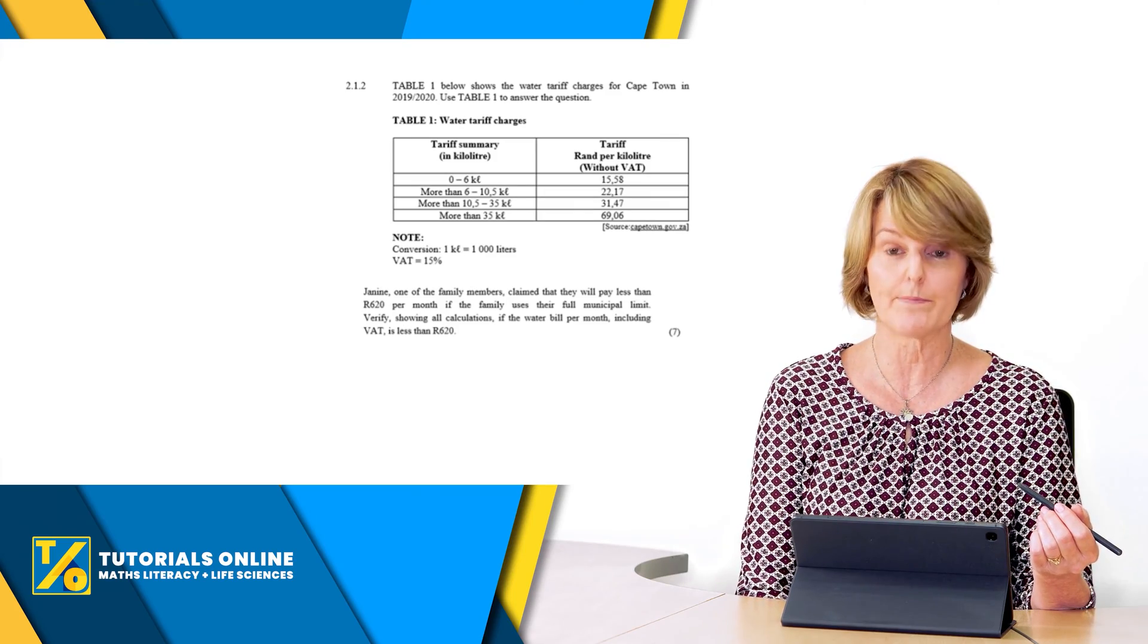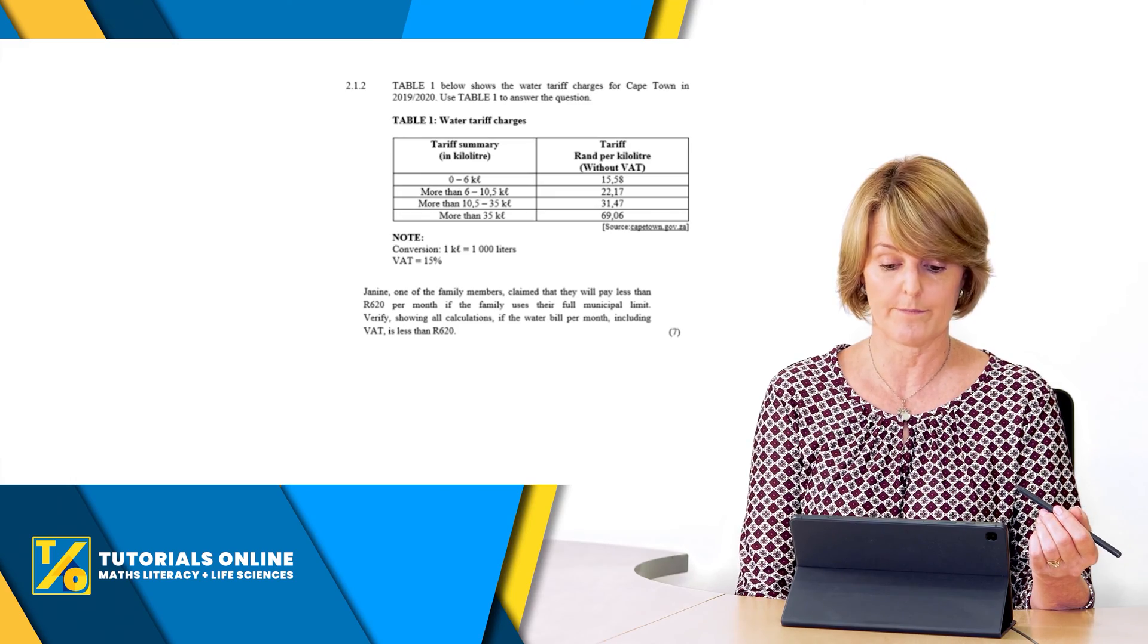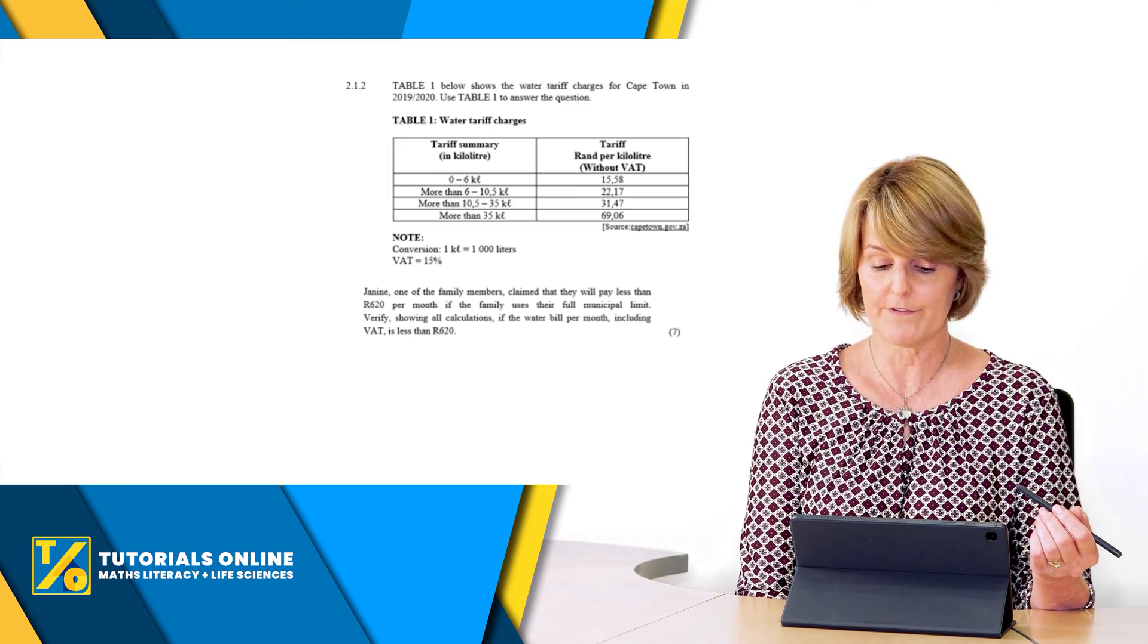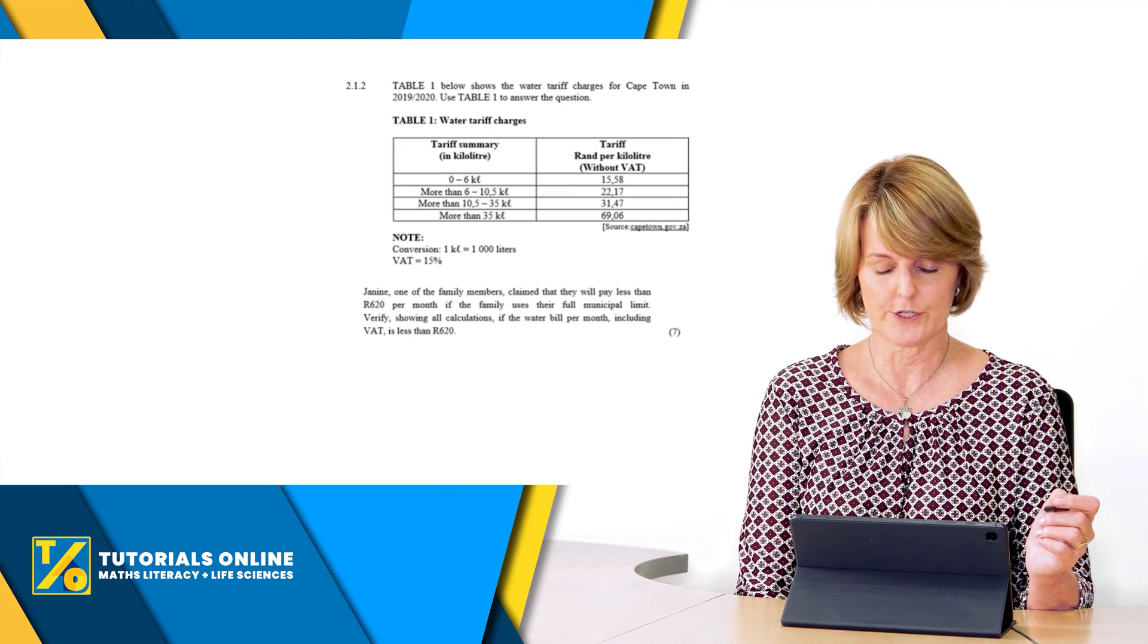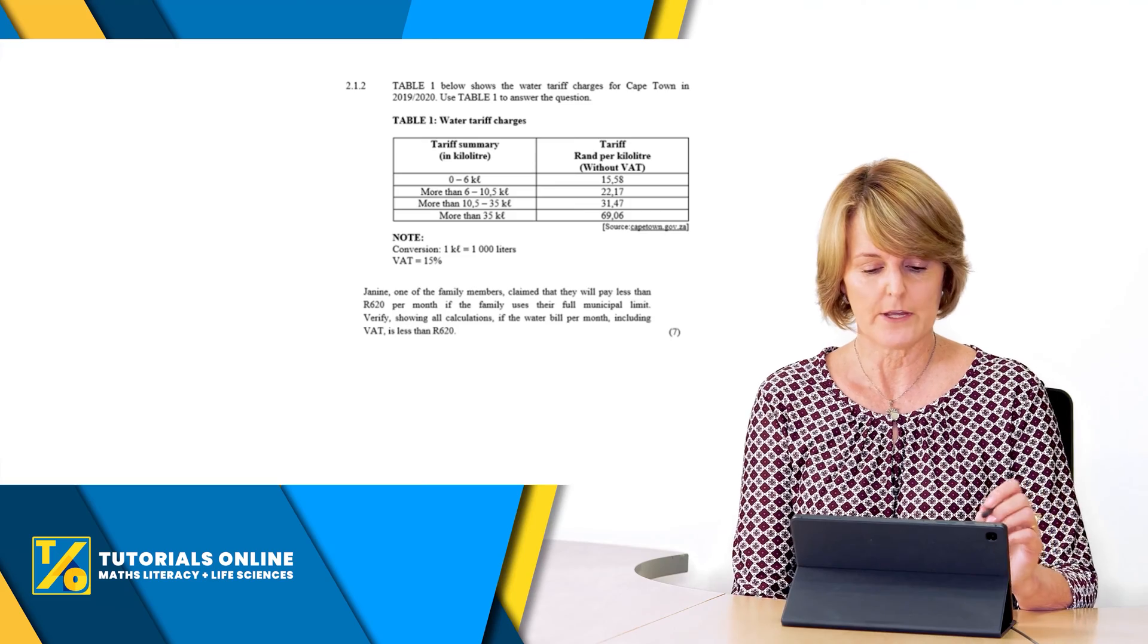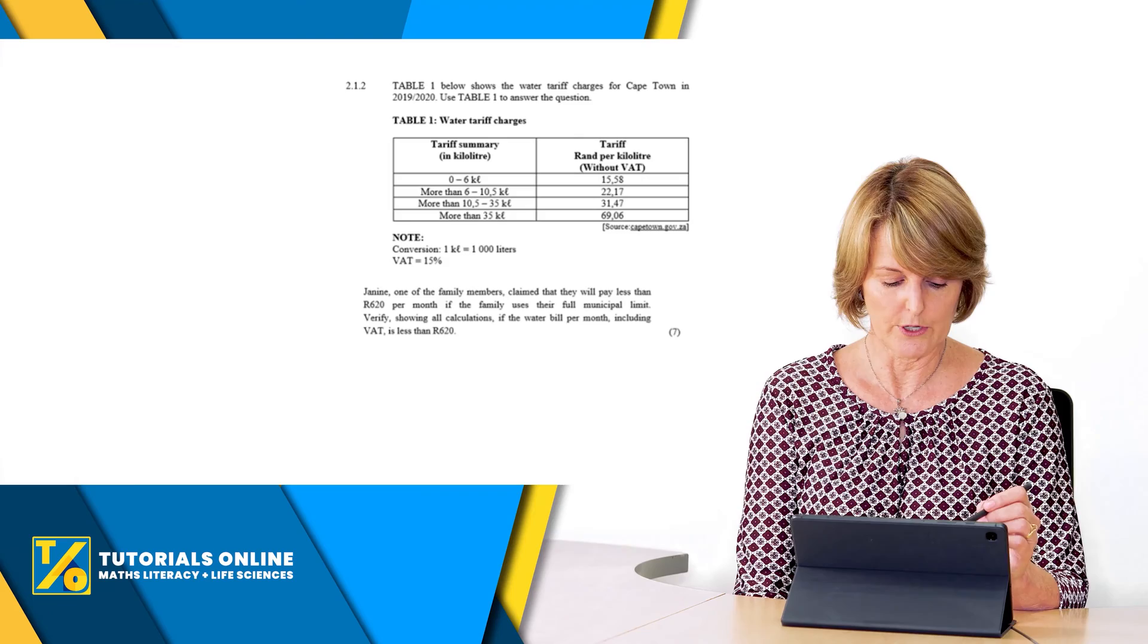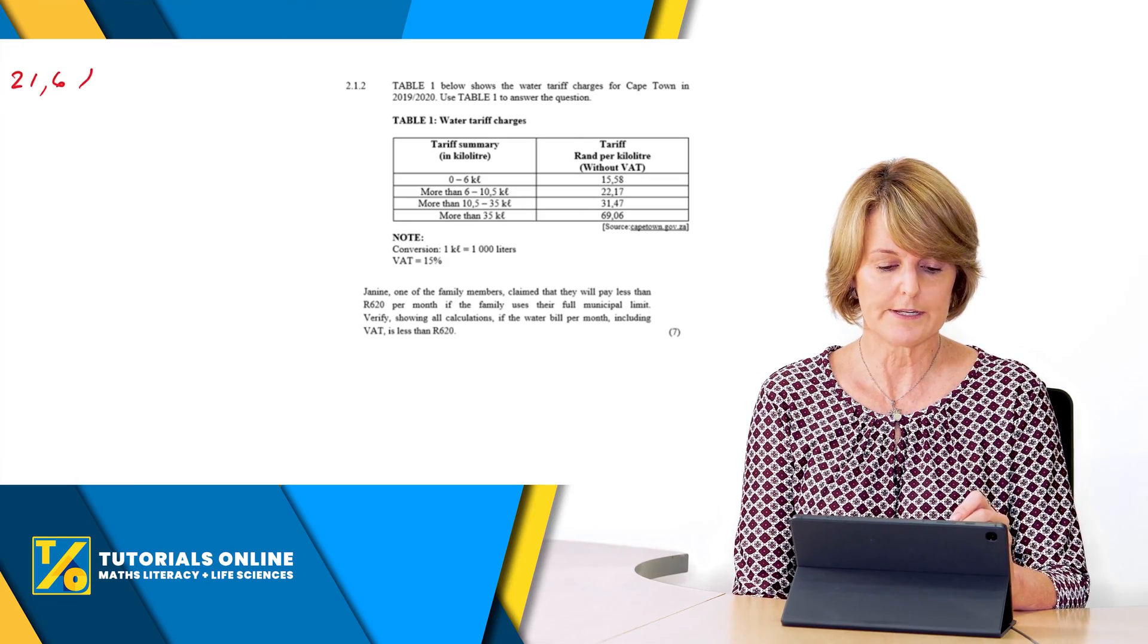It says Janine, one of the family members, claims that they will pay less than 620 rand per month if the family uses their full municipal limit. Verify, that means check it out showing all calculations, if the water bill per month including VAT is less than 620 rand.